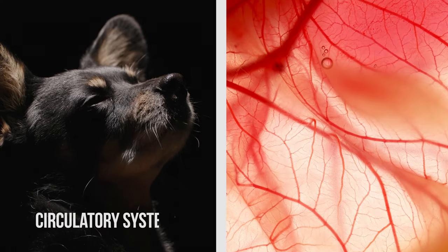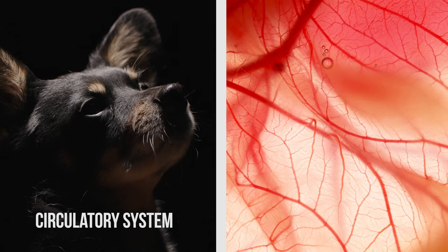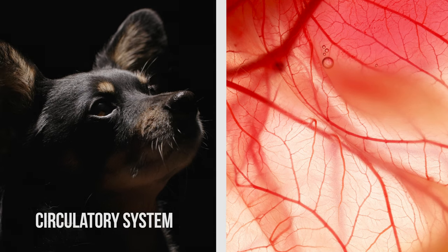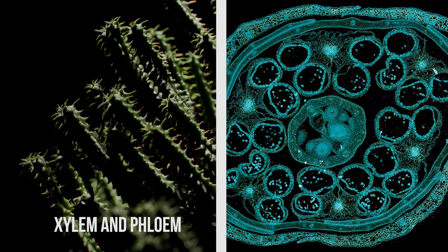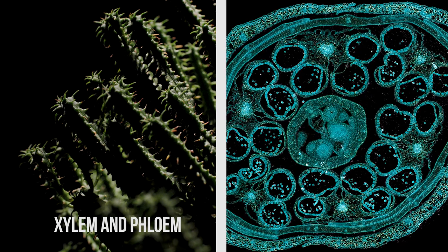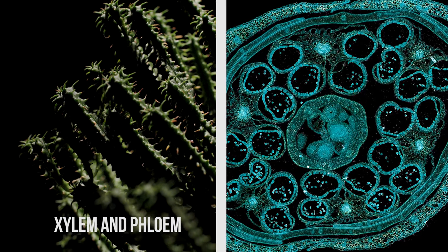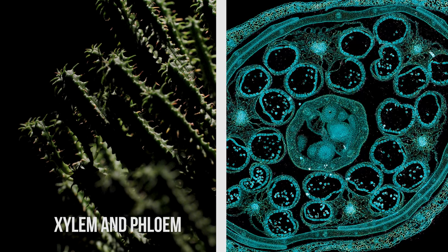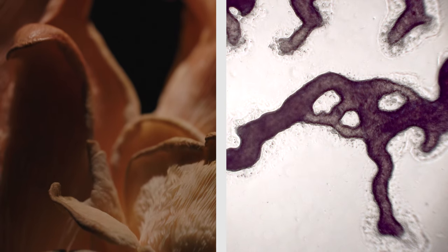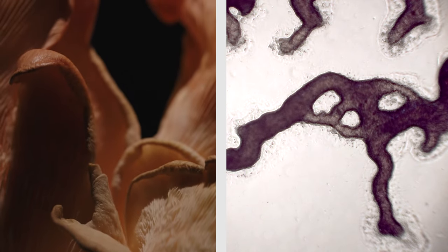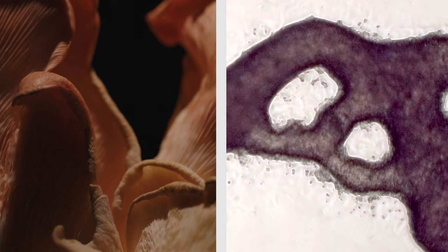Another difference is that both animals and plants have vascular systems — specialized systems for transporting fluids. In animals, this is the circulatory system of blood vessels, veins, and hearts. In plants, it's the xylem and phloem inside the stems, branches, and roots. Fungi, on the other hand, don't have any tissue for the transport of fluids and instead rely on streaming between cells to move fluids and nutrients around.